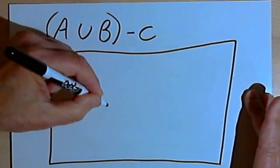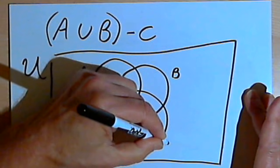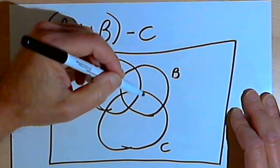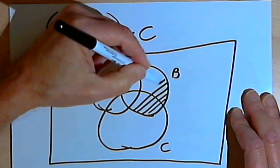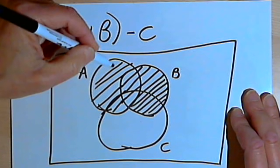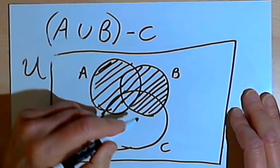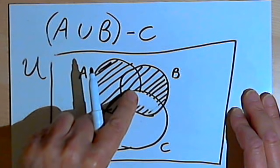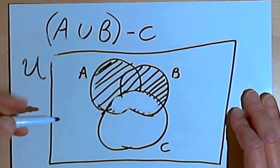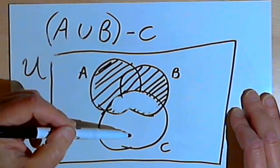Inside my universal set, once again those three circles — A, B, and C. The union of A and B means I'm going to shade in everything that's either within circle A or within circle B, or in both of them. And now what I want to do is take out the part that's in C, so I'm going to erase or unshade all of the area that's inside circle C. What I'm left with is basically just anything that's in A as well as anything that's in B that are not in C.